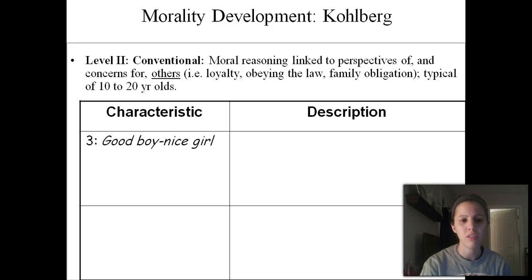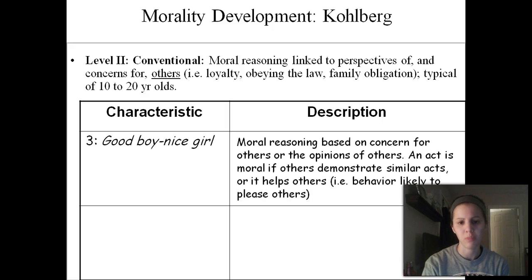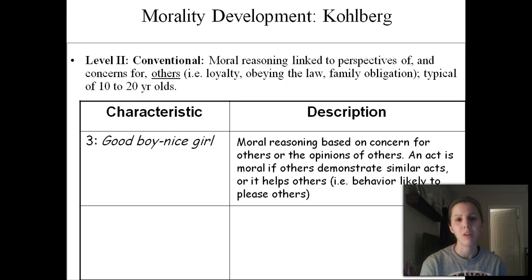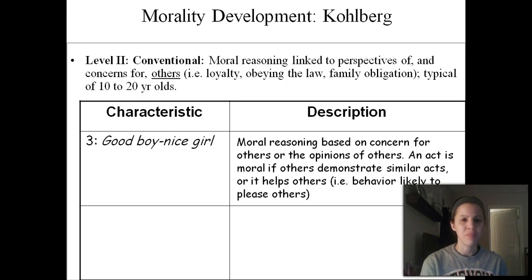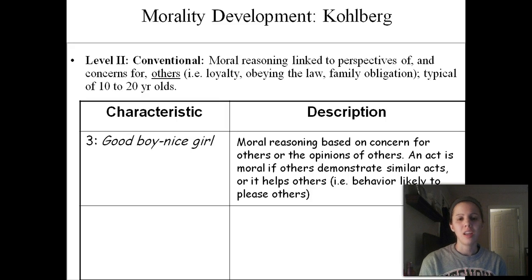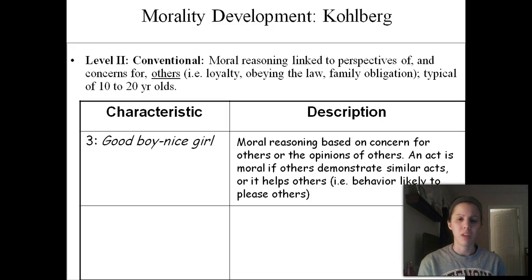The first characteristic of the conventional stage is called good boy/nice girl. Basically, your morals are driven by what other people think about you. For example, if you're considering whether to cheat on the AP Psych test and you respect the teacher, you decide not to cheat because you couldn't live with the shame of knowing the teacher thinks you're a cheater if you were caught.